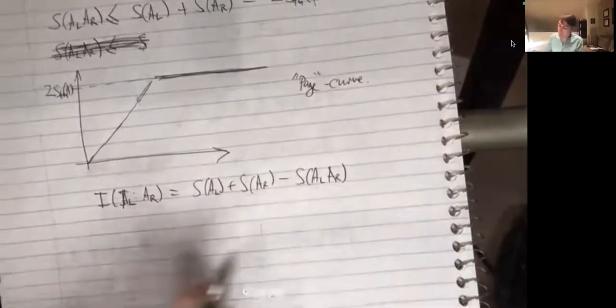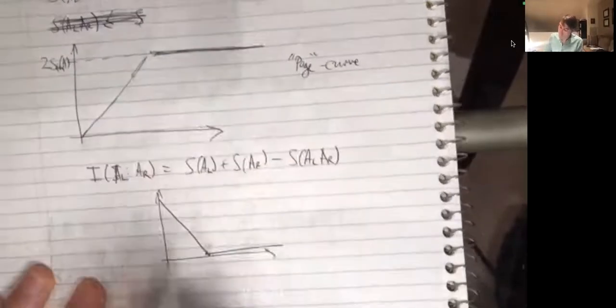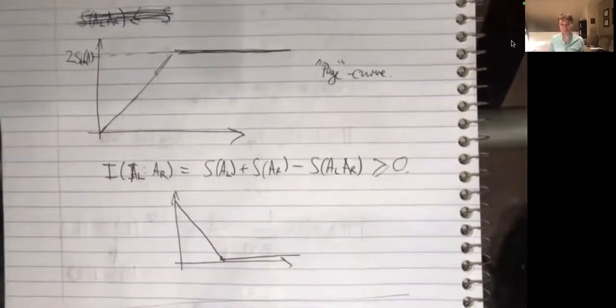Another way to think about this is to plot the mutual information between A_left and A_right: S(A_left) plus S(A_right) minus S(A_left A_right). That measures the correlations between A_left and A_right. We get a curve that starts off decreasing, but it can't decrease forever because the mutual information is bounded to be positive by subadditivity of entropy. So it starts very strong and dies out. We'll talk about this example in the context of black holes.